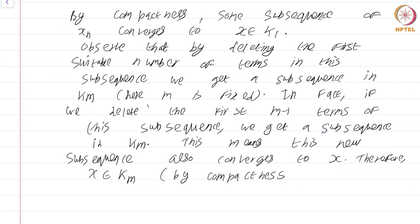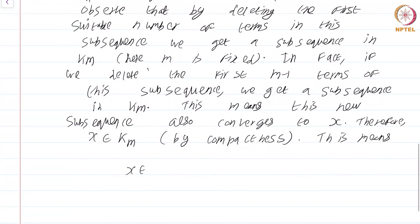Within a compact set, if you have a sequence that converges, that point to which it converges must be in k. So that means x is in intersection of k_m and we are done.